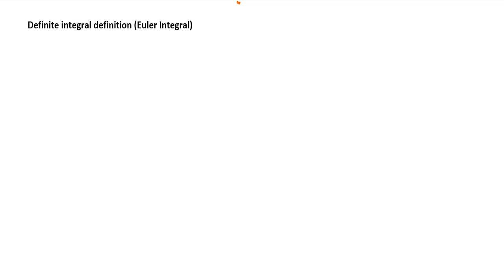The second definition is the definite integral definition, also known as Euler's integral. The definition is: gamma(z) is equal to the integral from 0 to infinity of e raised to minus t, times t raised to z minus 1, dt. The condition is that the real part of z must be greater than 0, otherwise the integral diverges.